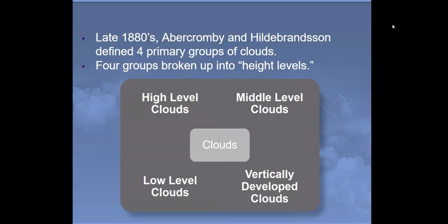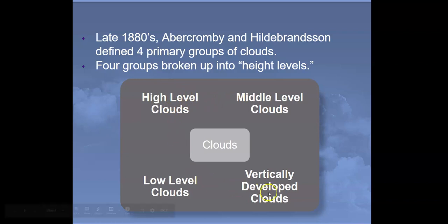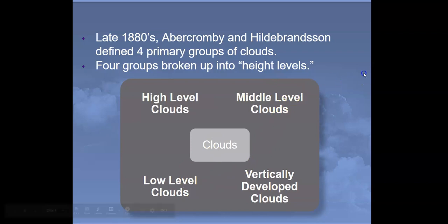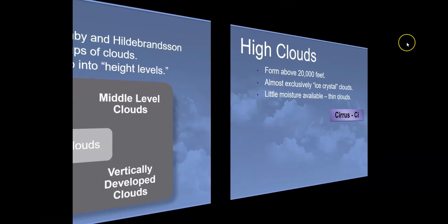In the late 1880s, Abercrombie and Hildebranson defined four primary groups of clouds broken up by height level: low level clouds, middle level clouds, high level clouds, and vertically developed clouds that didn't fit the others — they start at the low level but reach all the way to the high level, so they had their own grouping.